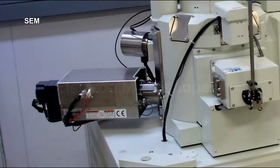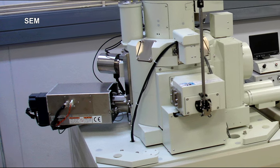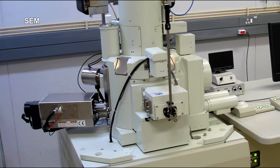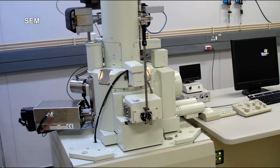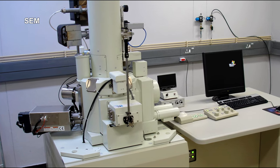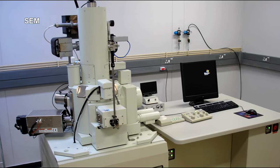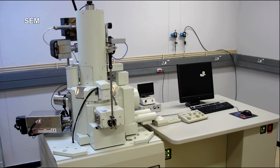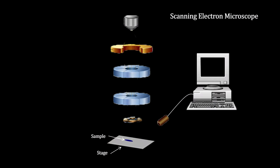Given the dramatic increase in resolving power over light, we'll use electrons instead of photons to illuminate the objects. The most common electron microscope is called a scanning electron microscope. Here's how they work.